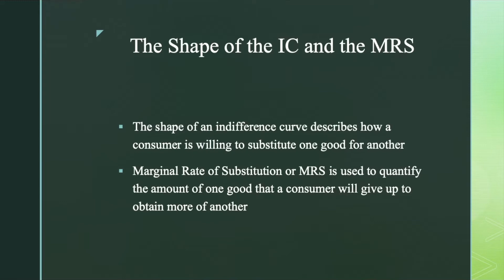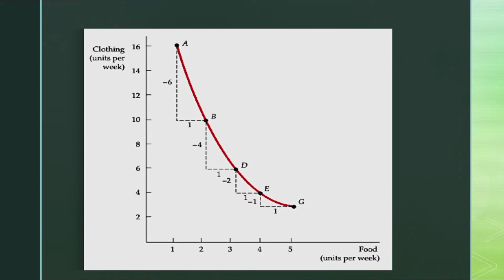Let's have a look again at the figure. Starting at market basket A and moving to market basket B, we can see that the consumer is willing to give up 6 units of clothing to obtain 1 extra unit of food. This means that the consumer is willing to sacrifice 6 units of clothes for 1 additional unit of food.